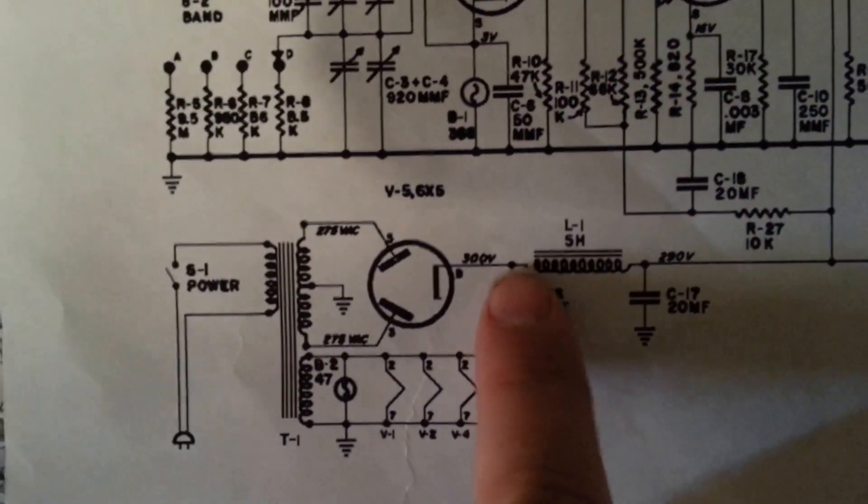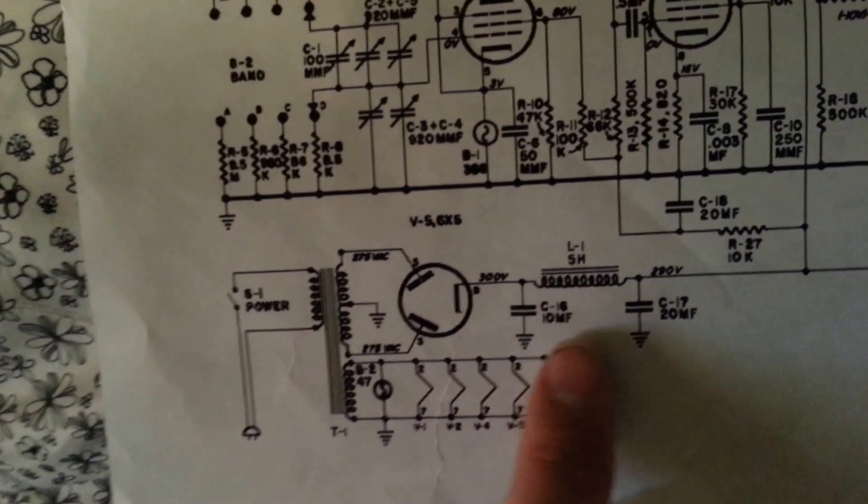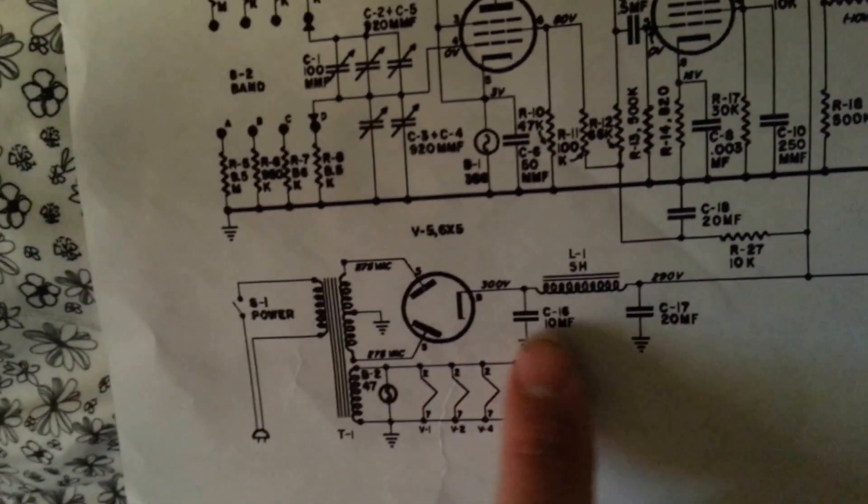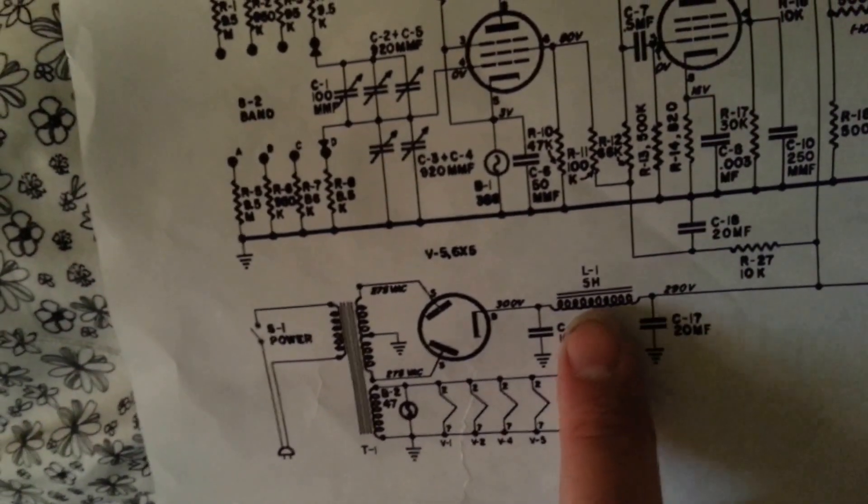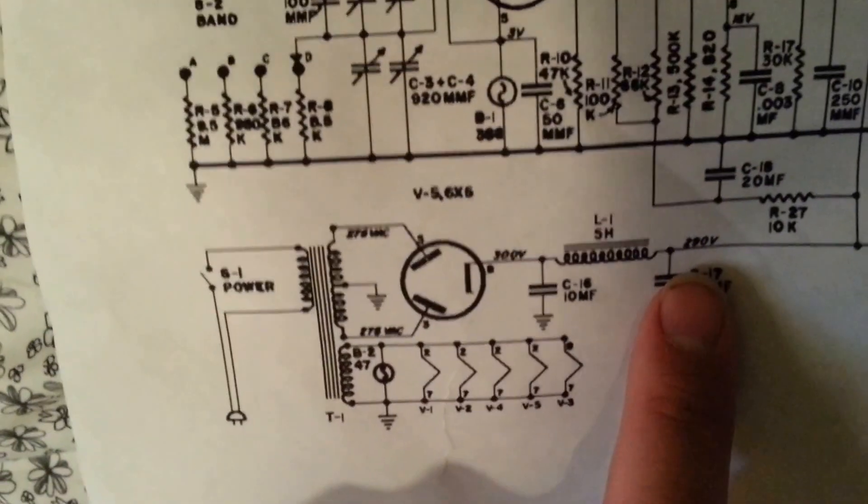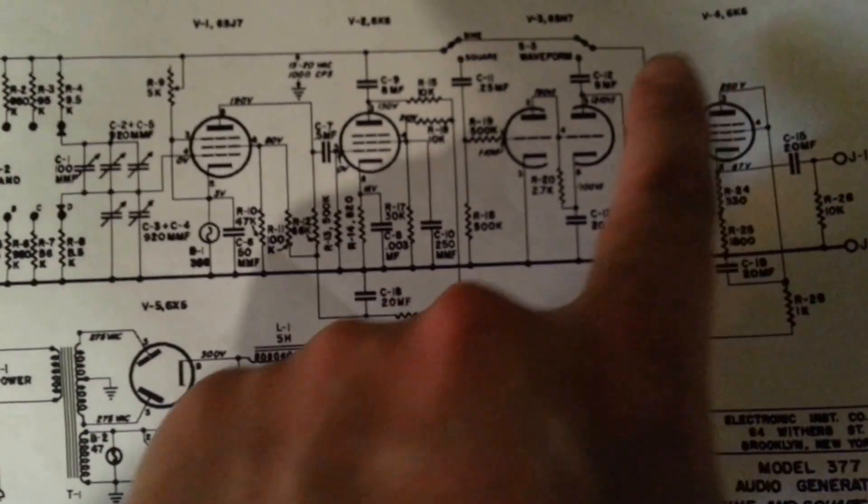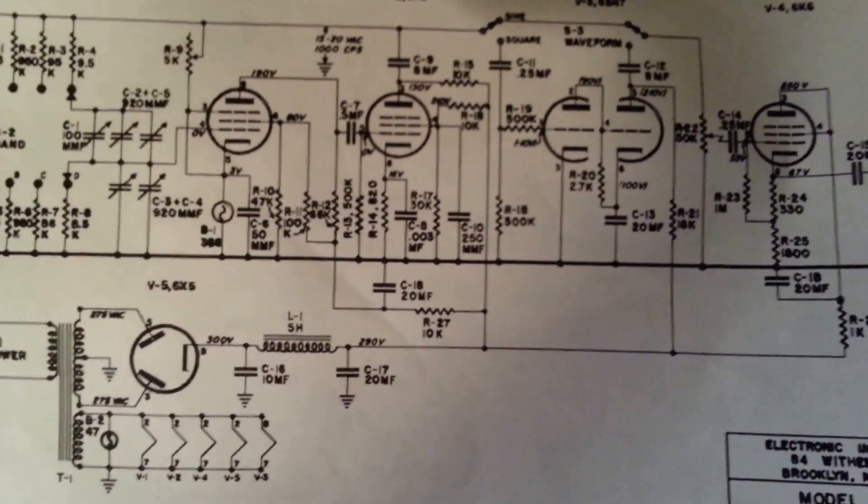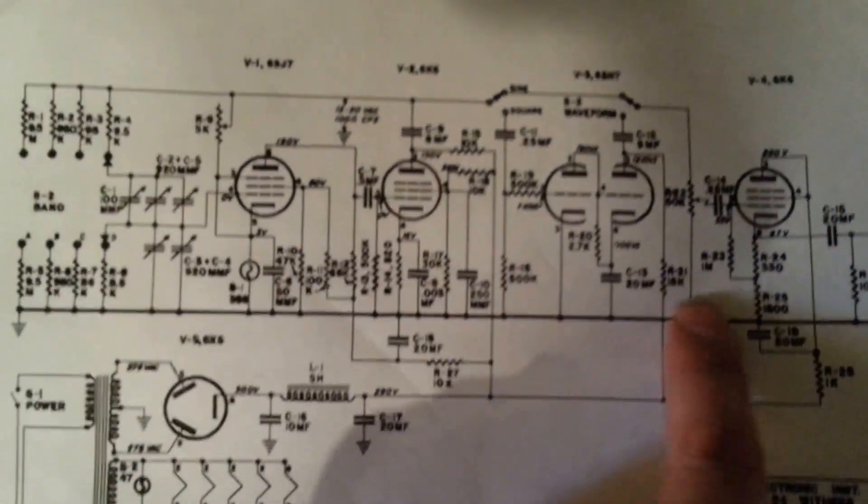This choke right here, I don't know where it is right now, and these two capacitors, it looks like here that it's actually dividing down the voltage a little bit so you have this 290 volt output that goes into, that is your B plus for all of the stages of this audio generator.